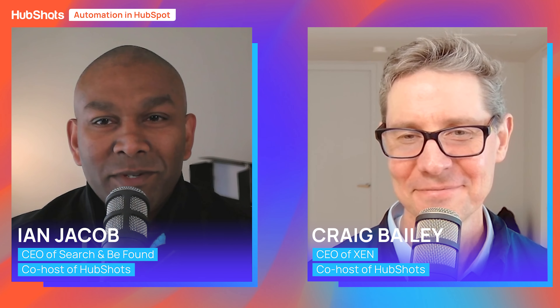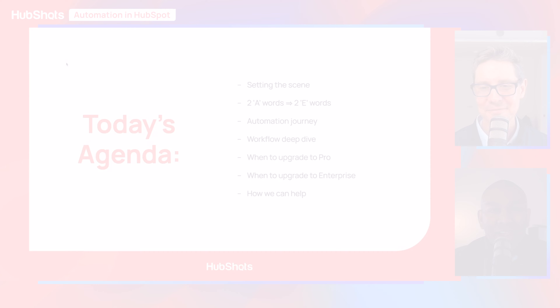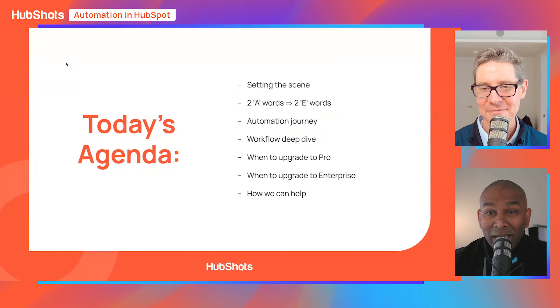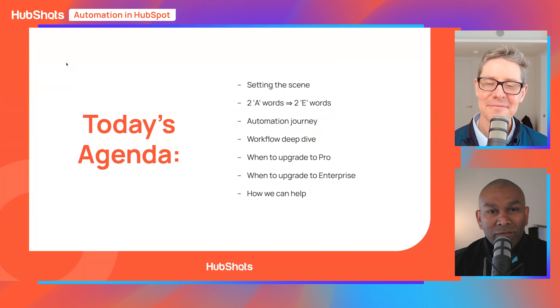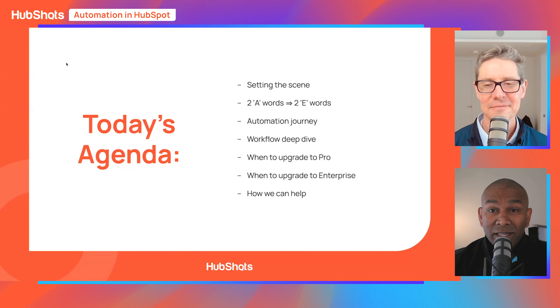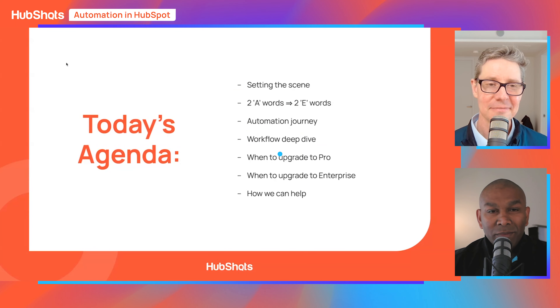Hi everyone. Welcome to HubShots episode 288. In this special episode, we talk about automation in HubSpot. We will cover the two A words and the two E words that we often talk about when discussing automation. We do a deep dive on the automation journey so you can understand how to use it, when to upgrade to professional, when to upgrade to enterprise, and how we can help you.